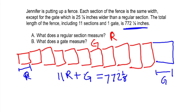Now I've got two variables, so I can't solve that. Let me look and see if I have any more information that could be helpful. The gate is 25⅛ inches wider than a regular section. Okay, so G equals regular section plus 25⅛.